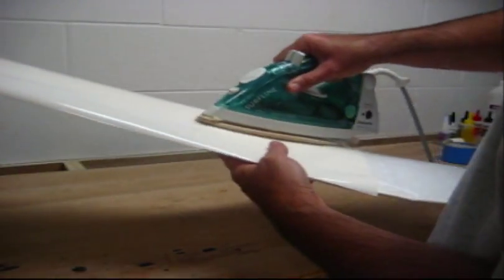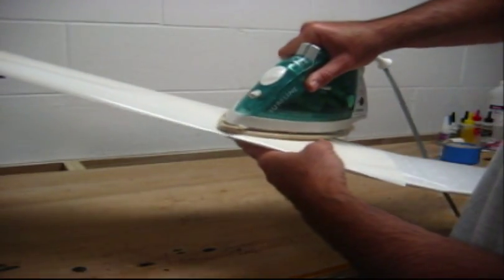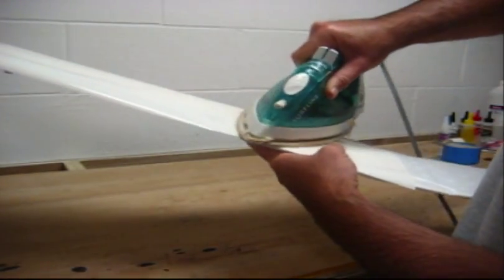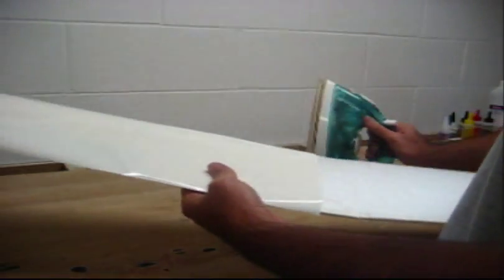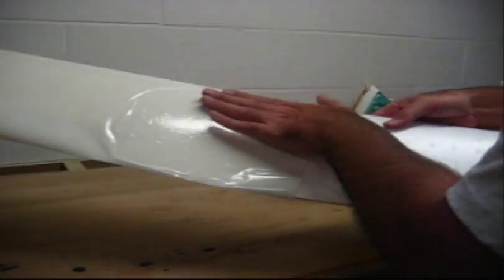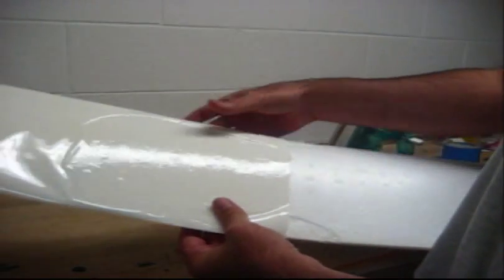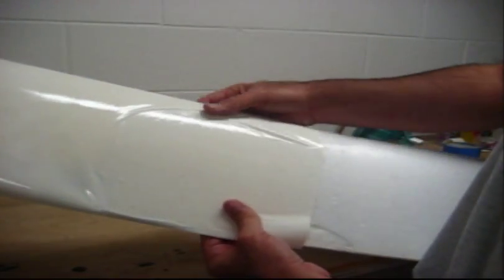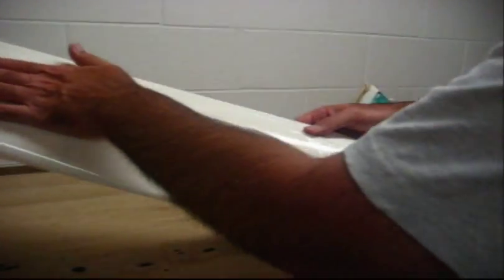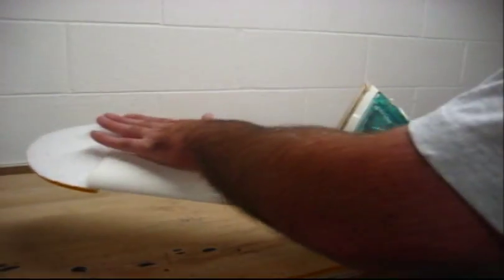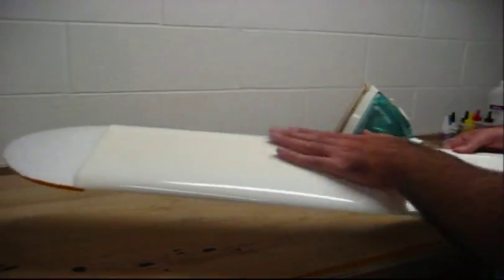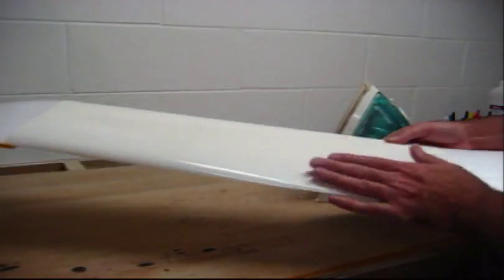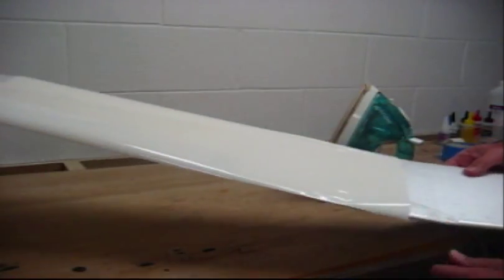Then we'll come back after we get all the wrinkles out across the top of the wing. Then we'll slowly start working around our leading edge. But we'll want to get down the wing in this direction first, across the top of the wing, working out in this direction. And then we'll come back and smooth these out.